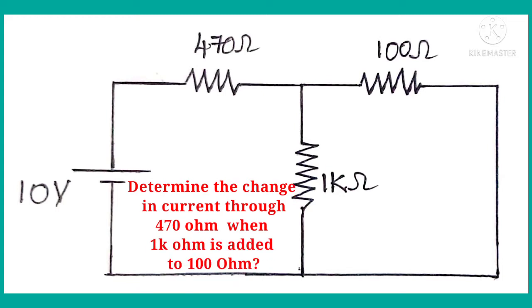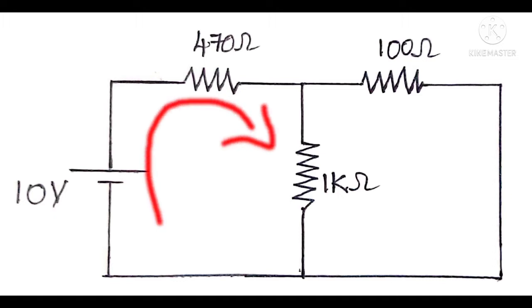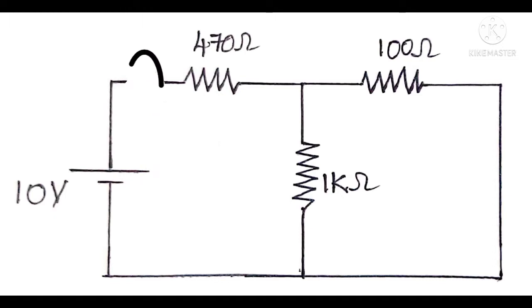We need to determine the change in current through the 470 ohm resistor when a 1 kilo ohm resistor is added to 100 ohms. In the first step, we will take the circuit as it is without connecting any resistor in series to 100 ohms and measure the current through 470 ohms by connecting an ammeter in series. The positive terminal of the ammeter is connected to the positive terminal of the voltage source and the negative terminal is connected to 470 ohms.